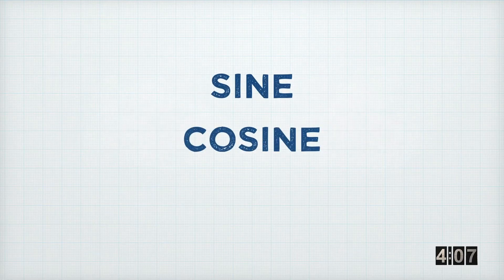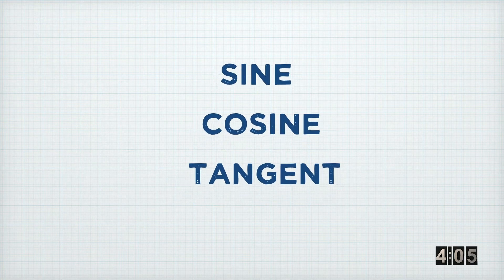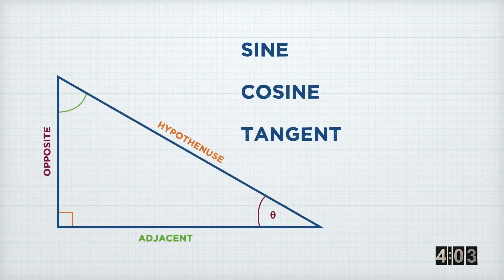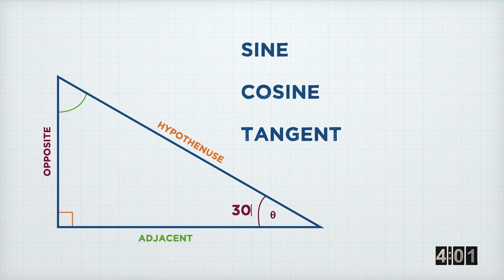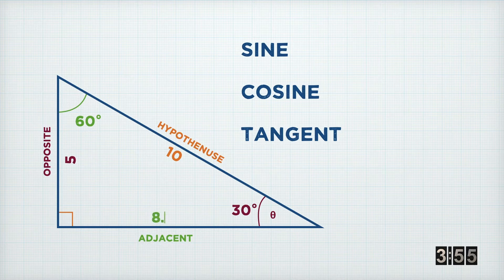Now, there are three basic functions in trigonometry: sine, cosine, and tangent. If we go back to our triangle, then we can have a look at how that works. So the sine function tells us that the sine of our angle is equal to the length of the opposite side divided by the length of the hypotenuse.